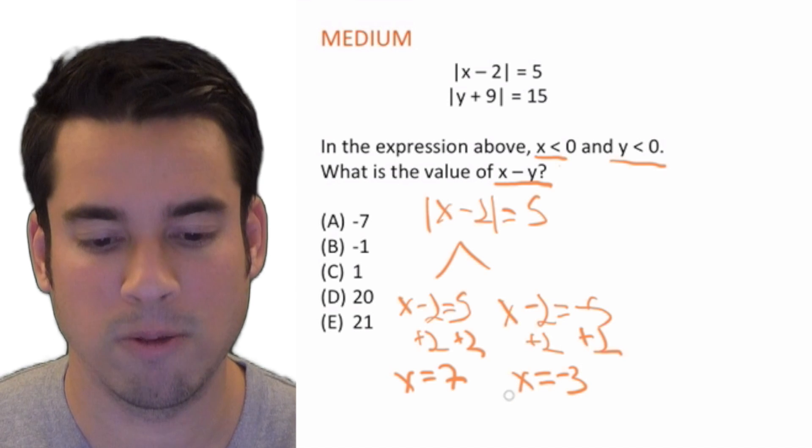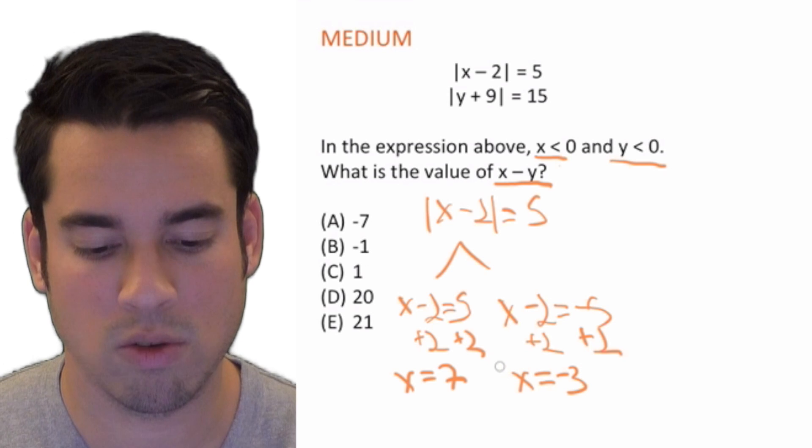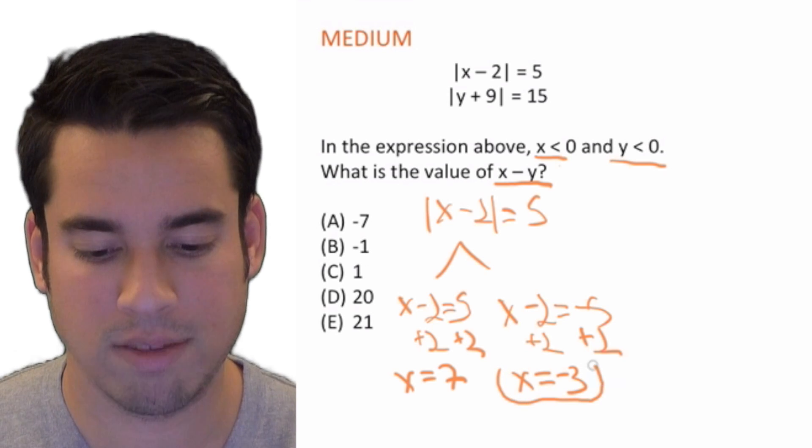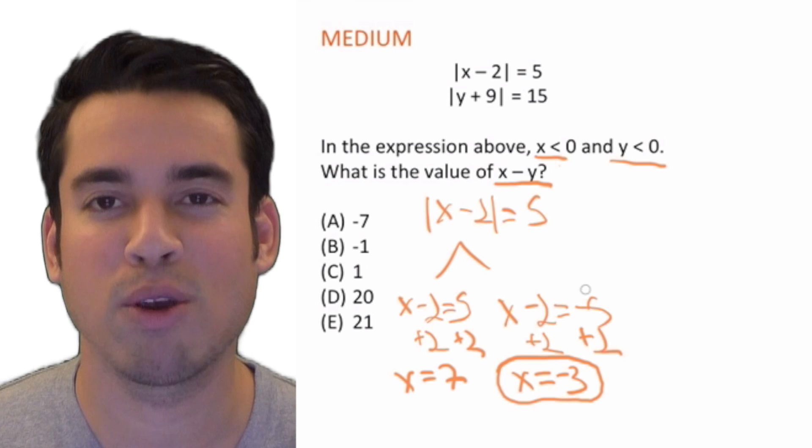Now what do we say at the beginning? x has to be negative, so the only value that works here is -3. So now we got our x value, now let's figure out y.